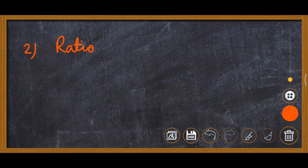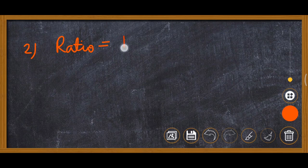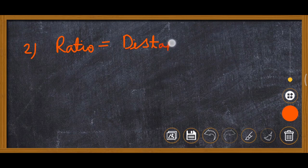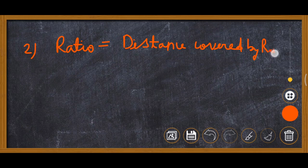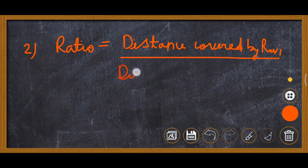Now this is question number 2. Here we have to find ratio. Ravi walks 6 km in an hour. So distance covered by Ravi upon distance covered by Roshan.